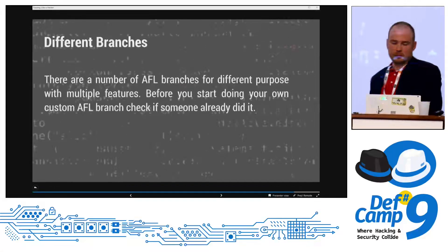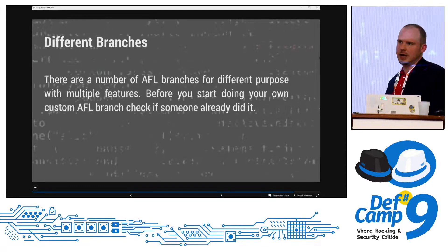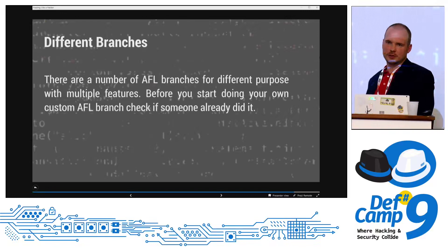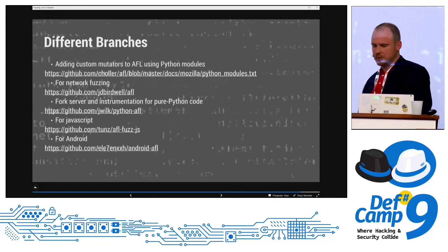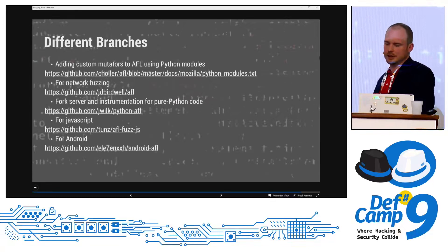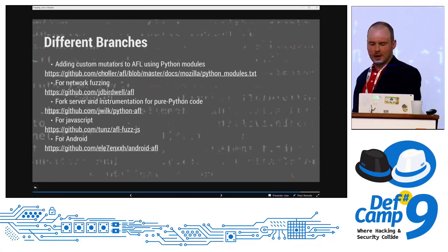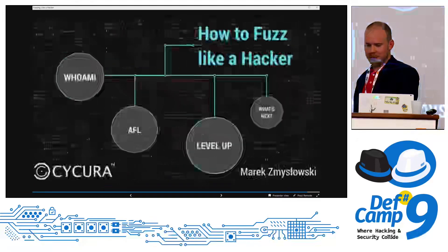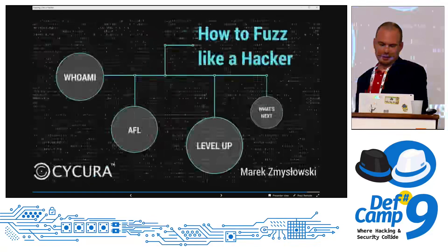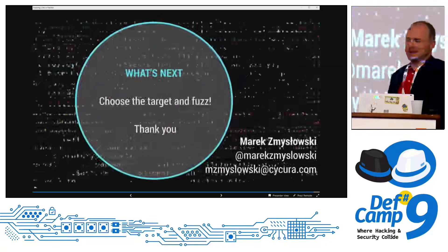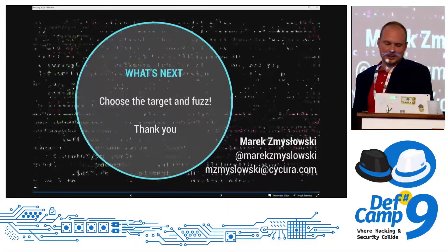The last thing I'd like to mention is about different branches. AFL has become a very popular tool and right now there is a lot of stuff going on around AFL — it's not just simple AFL anymore. There are different branches available. There is one for Android, one for JavaScript, one for network fuzzing, one even for Python modules. There are many different branches. The trick is that before you start fuzzing and trying to change AFL, just Google whether someone already wrote an AFL for that target. So just choose the target and fuzz.